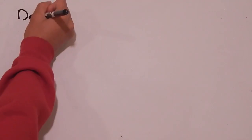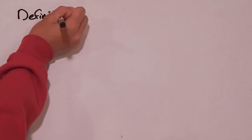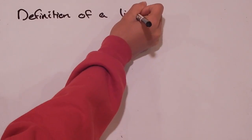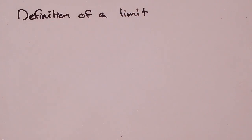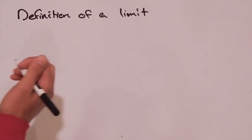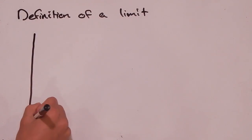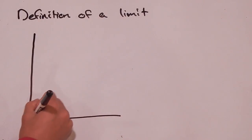Today we're going to talk about the definition of a limit. We talked about what a limit was and what it kind of means, but we didn't give it a precise definition. What we want to do in this video is give it a precise definition and show you how you can prove that a limit exists and equals a certain value. We're going to look at some arbitrary function to start off, and I'm going to call this function f of x.